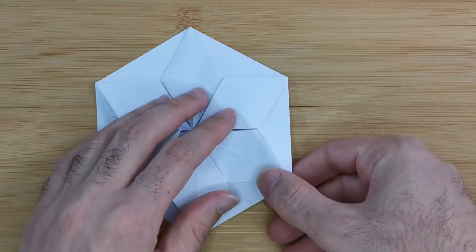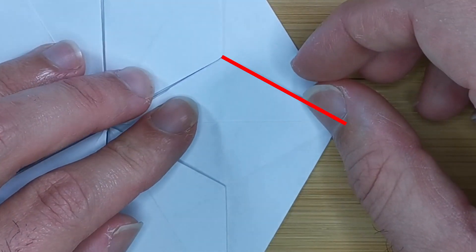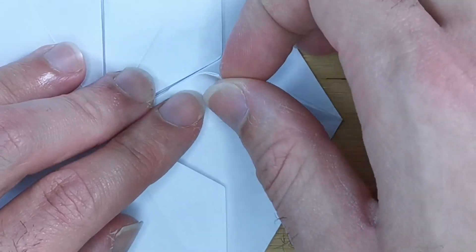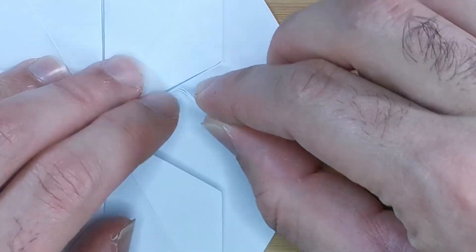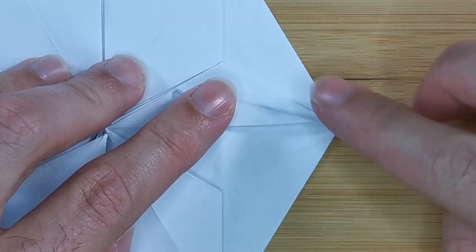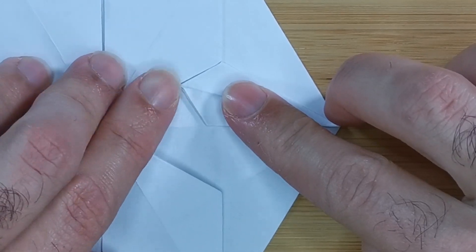Each diamond has two flaps. Fold one up like this. Now we want to bend this edge to the center crease, but only pinch this point. Don't crease throughout.